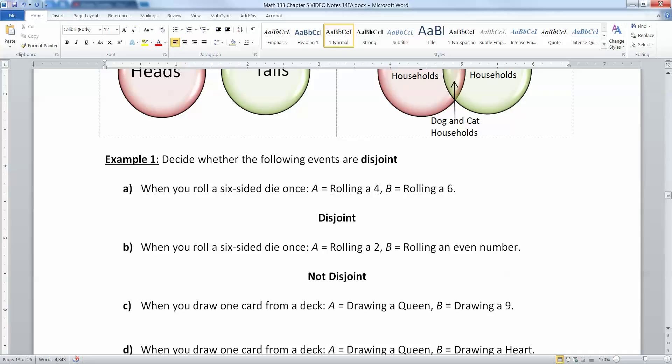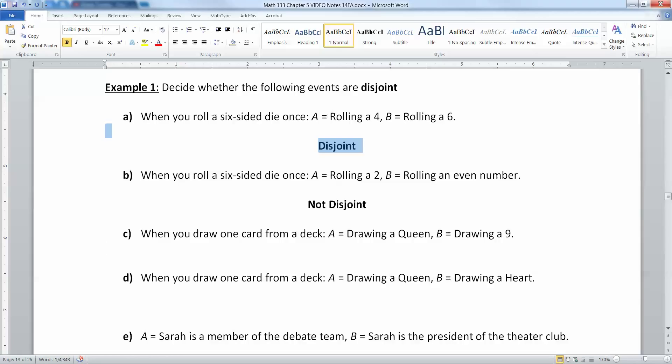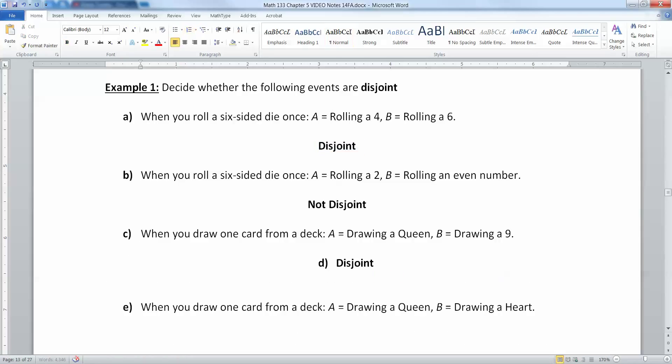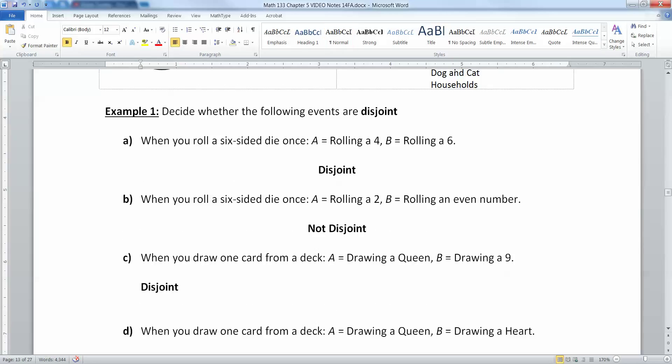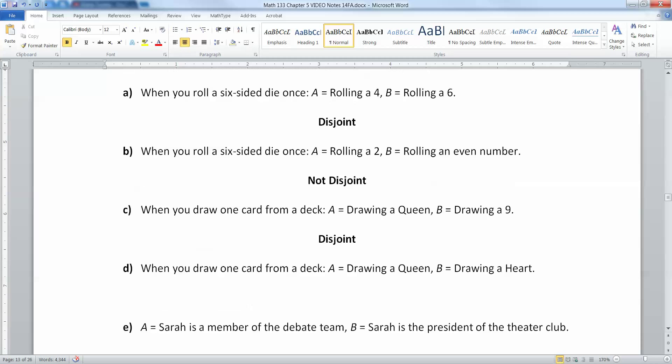What about drawing a card from a deck? If you draw a queen or a nine, if you draw a queen then it's automatically not a nine. It can't be, so that would be disjoint for sure. Then what about drawing a queen and a heart? That's not disjoint because if you draw a queen, it is possible that you have drawn the queen of hearts.